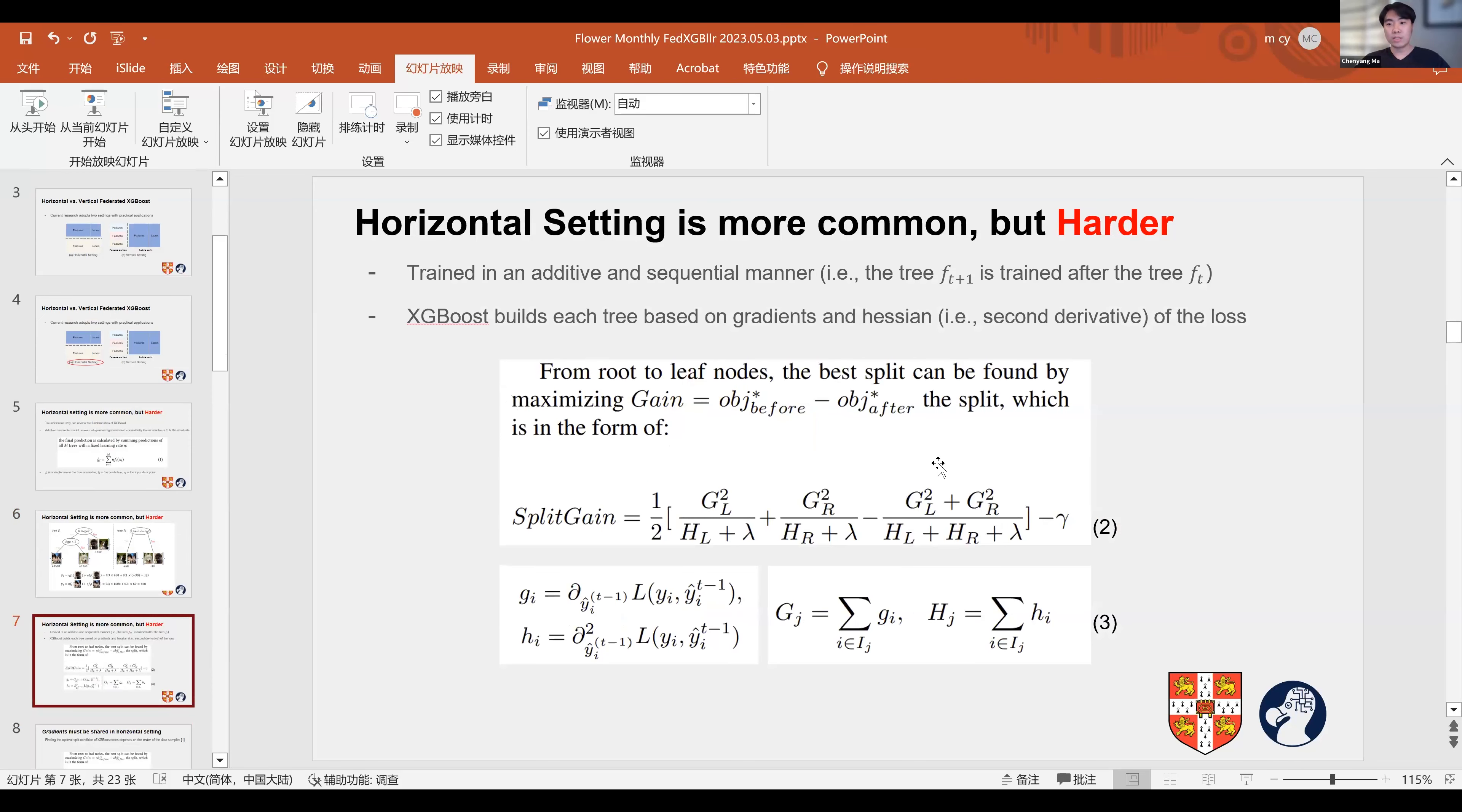The training of XGBoost is done in an additive sequential manner. To train a single tree, we first calculate the first order gradient and second order Hessians of all data samples as shown in equation three. Then from the root to leaf nodes, the best splitting points can be found by maximizing the split gain.